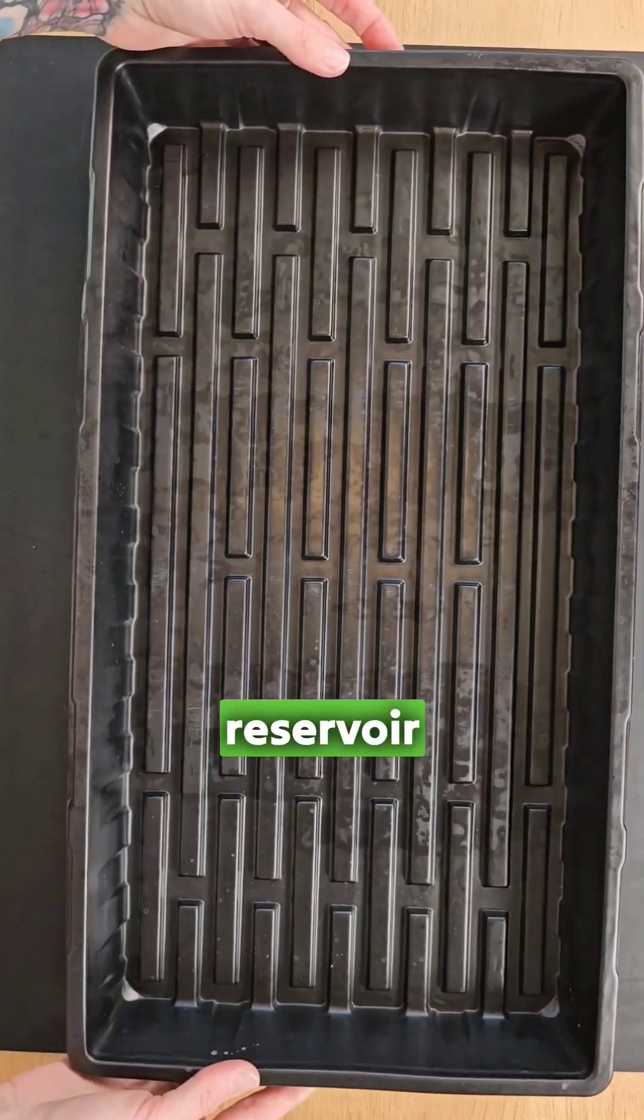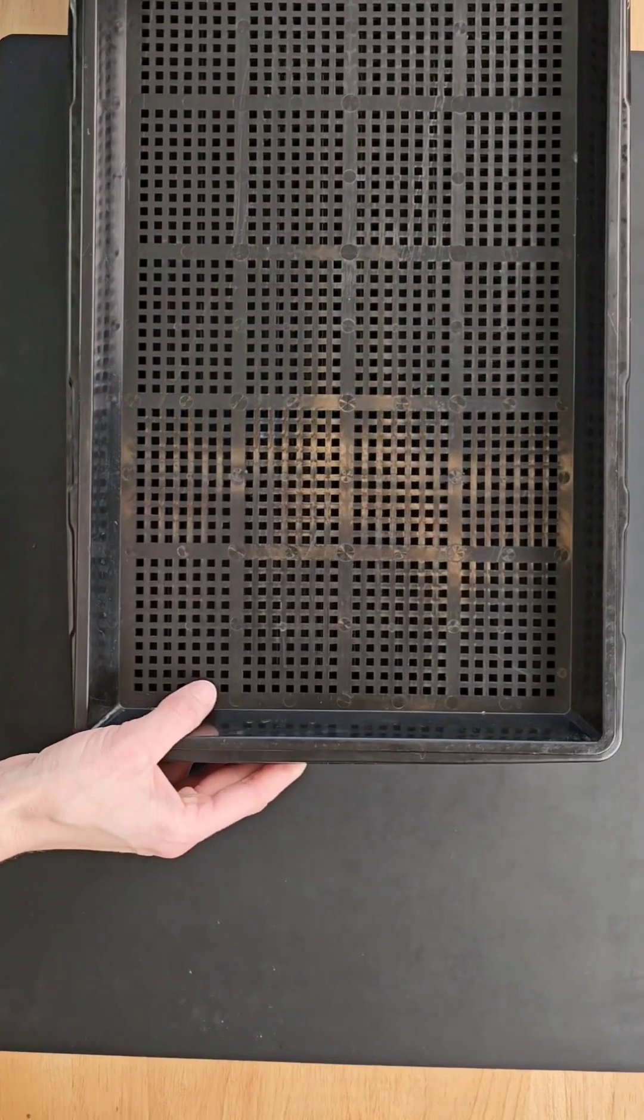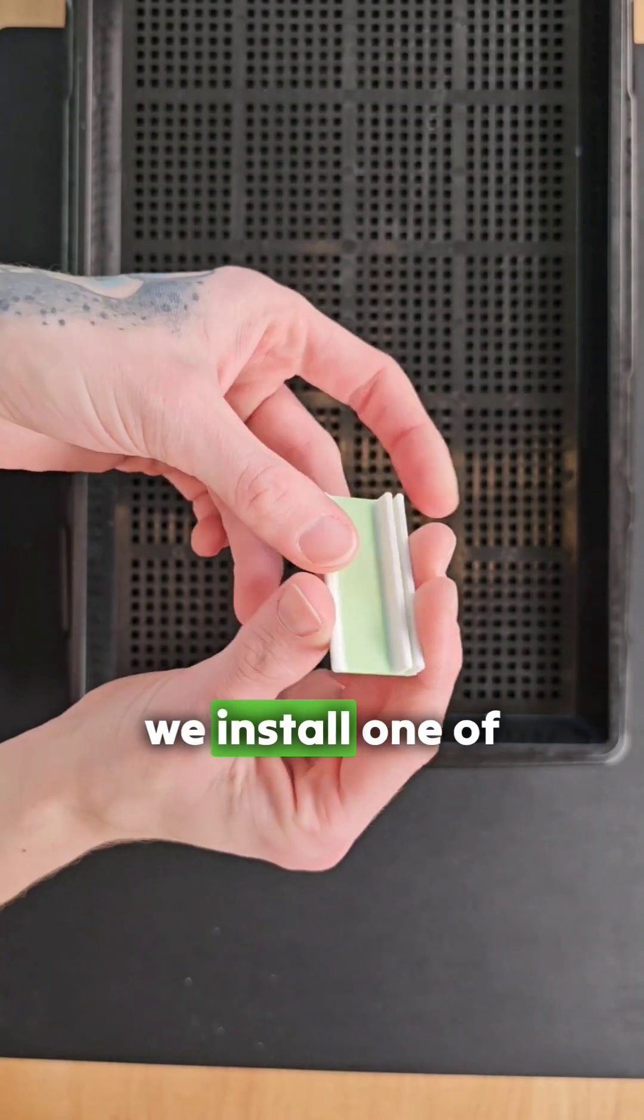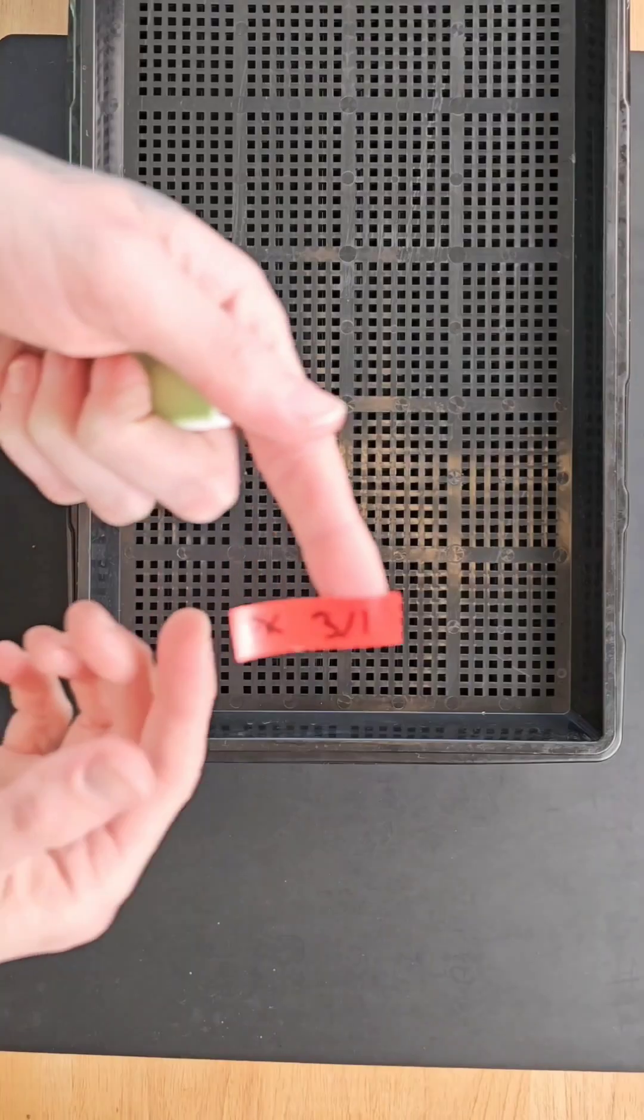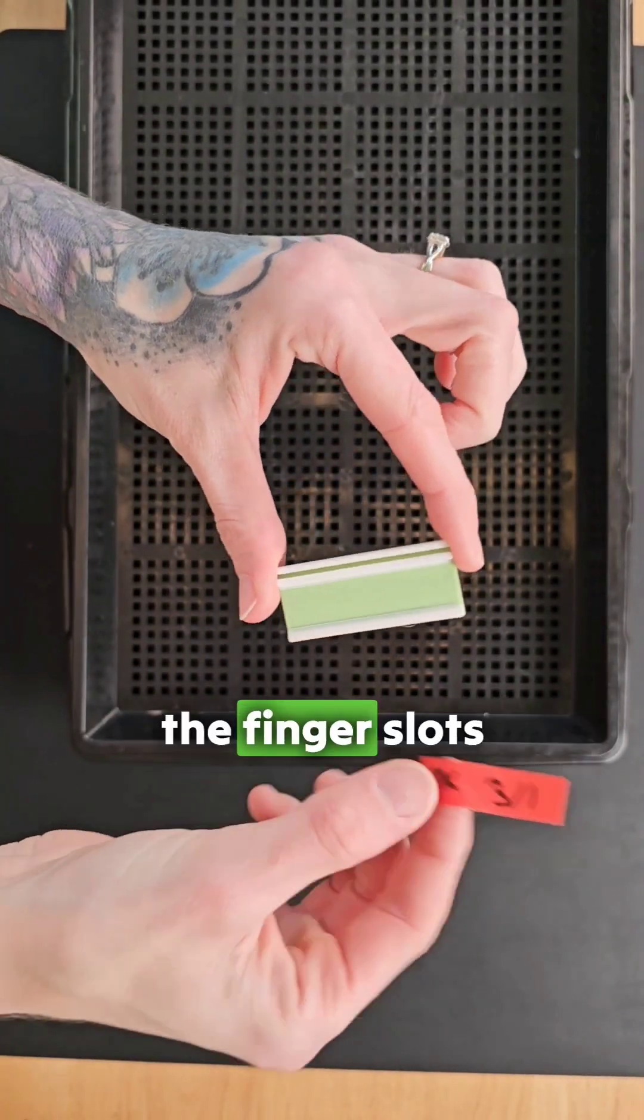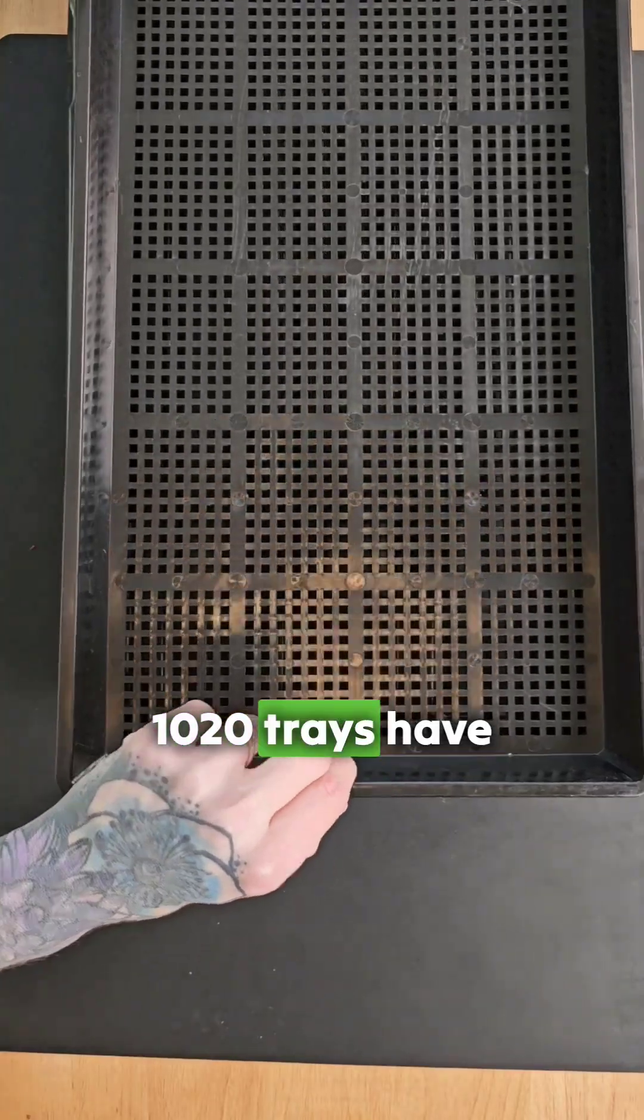It becomes a deep reservoir later in the grow. To track our grow, we install one of our patent-pending tray clip labelers that attaches to the tray. They clip in the center of the tray and even go over the finger slots that some of the 1020 trays have.